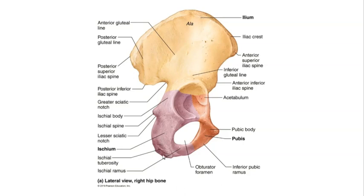The inferior surface of the ischium contains a rough and thickened region called the ischial tuberosity. This is the site of attachment for the hamstring muscles located at the posterior side of the thigh. It's also an attachment point for a large ligament that holds the pelvis together. Another important function of the ischial tuberosity is that when we are seated in a chair, the tuberosity supports our body weight.